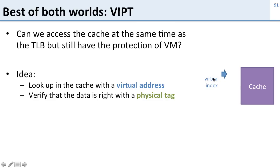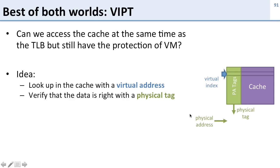Here's how it works: using the virtual address from the CPU, we index into the cache to find the right cache line. We get out the tag for that cache line, but the tag is a physical address. To check if it's the right data, we take that physical tag and compare it to the physical address from the TLB. This means we can start looking in the cache right away with the virtual address, and simultaneously do the translation so that when we're done looking in the cache, we have the translation and can verify a hit or miss.